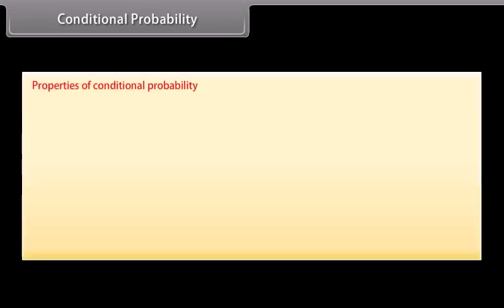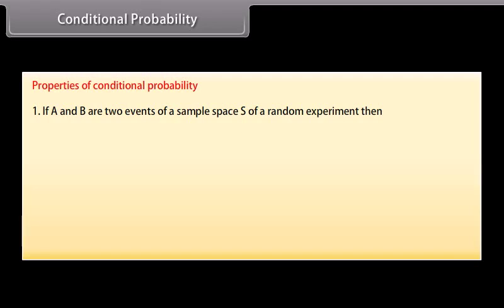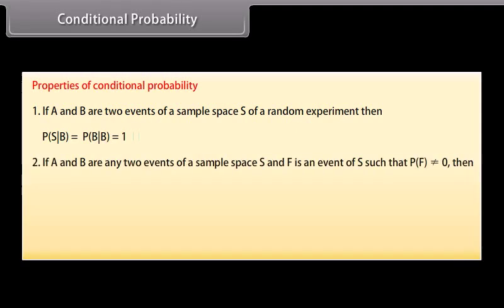Properties of Conditional Probability. Property 1: If A and B are two events of a sample space S of a random experiment, then P(S|B) = P(B|B) = 1.